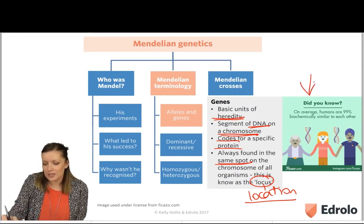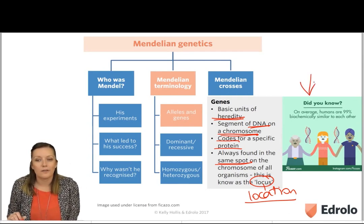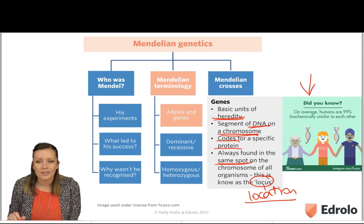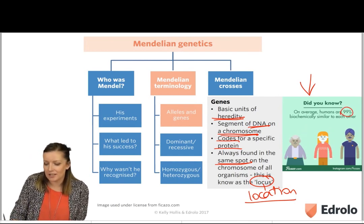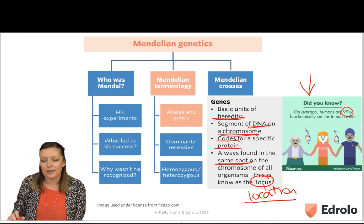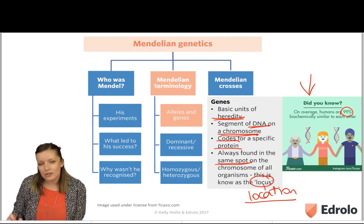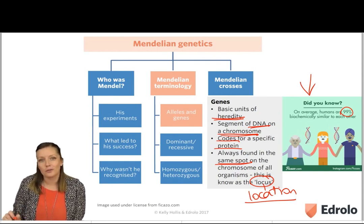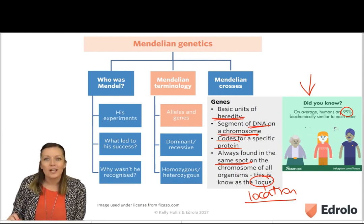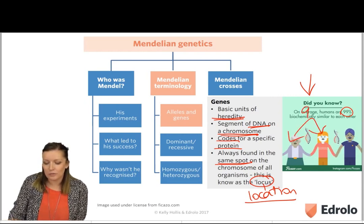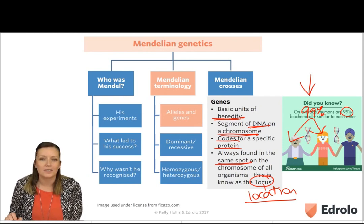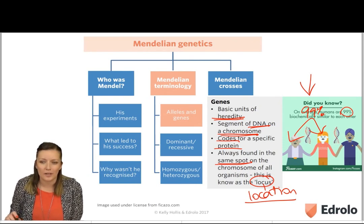This image here shows an interesting fact: did you know that on average, humans are 99% biochemically similar to each other? So look at the person next to you — or if you're alone, go look at somebody on the street — and you'll see that 99% of your genes are similar to one another.